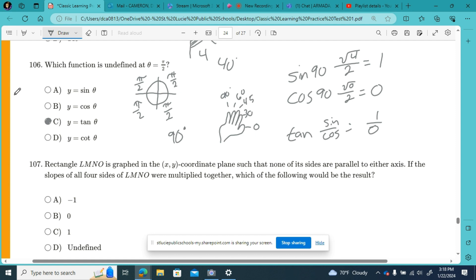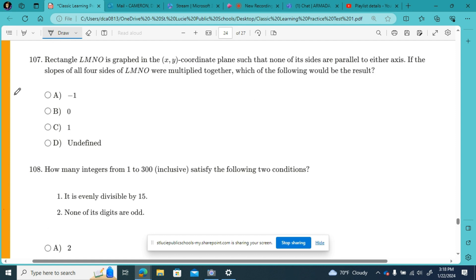107. Rectangle LMNO is graphed in the XY coordinate plane such that none of its sides are parallel to either axis. If the slopes of all four sides of LMNO were multiplied together, which of the following would be the result? So you've got a coordinate plane, and you've got a rectangle. So let's say something like this.